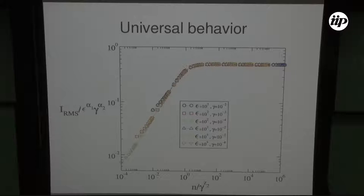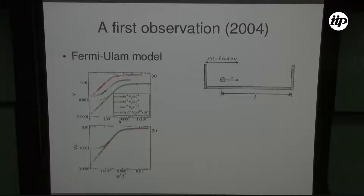These results were published in recent years, but the first observation of this approach was made on the Fermi-Ulam model. The first publication using this scaling formalism — proposing hypotheses, homogeneous functions, and so on — was in 2004.